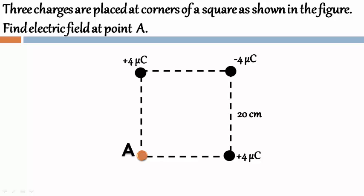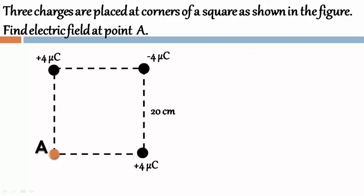Three charges are placed at corners of a square as shown in the figure. Find electric field at point A. First of all, let us label the rest of the corners as B, C and D.